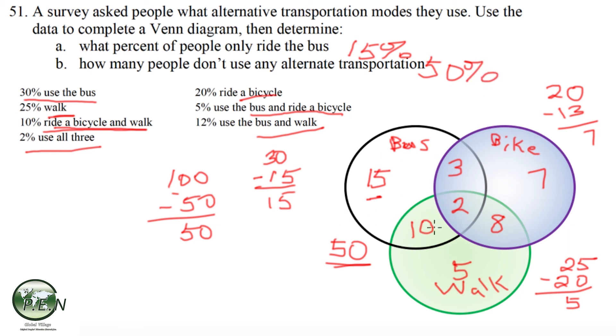So that's how you can use a Venn diagram with three circles to track three different characteristics and be able to answer some questions about who does what.